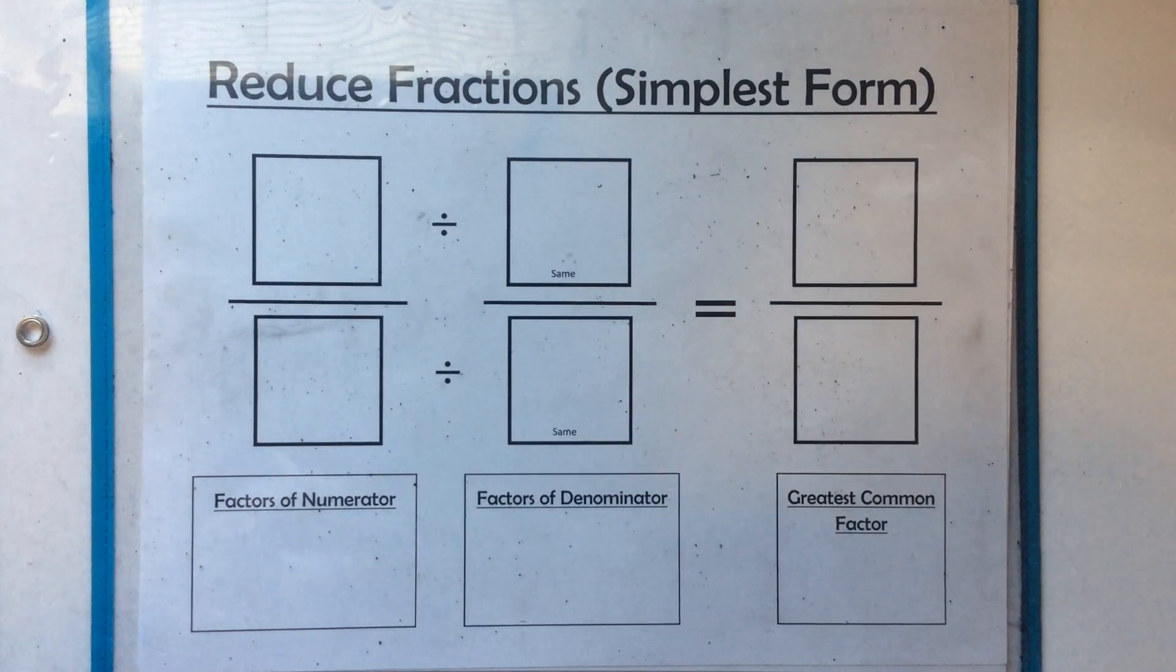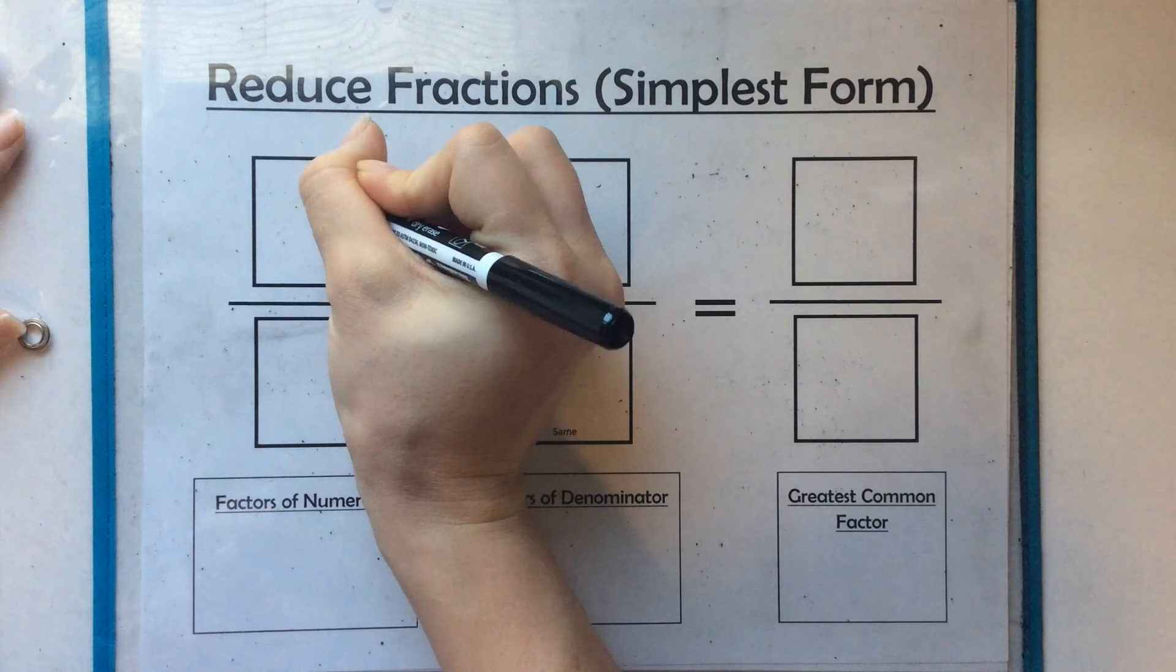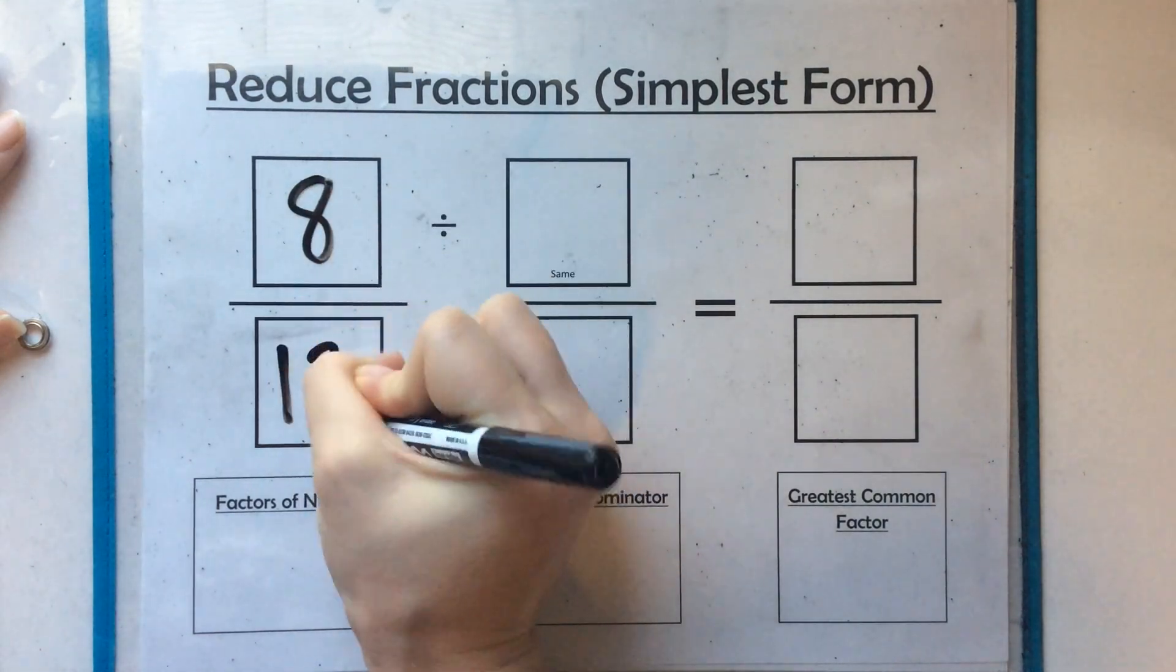Alright, let's do another simplest form problem. But this time we're going to use 8 twelfths.